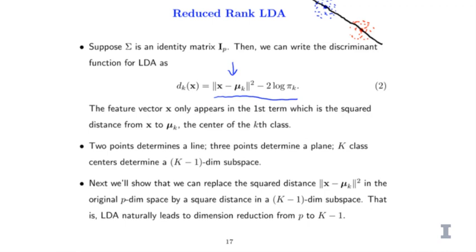For example, consider the special case where k equals 2 — a binary classification problem. The original dimension p is 2, and there are two centers. The data clouds look sphere-shaped because the covariance matrix is identity. Although the data are in the two-dimensional space, we can do classification by projecting all the data points to that black line, and just check which center is closer to make our decision. So there is a natural way to reduce the dimension from p to k minus one — in this extreme case, just one dimension.